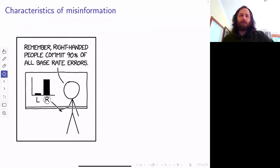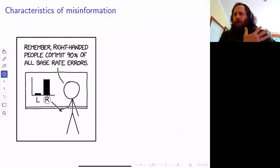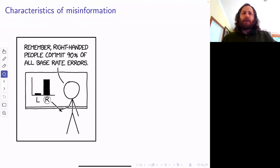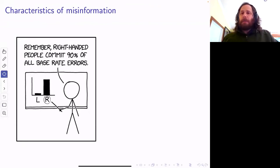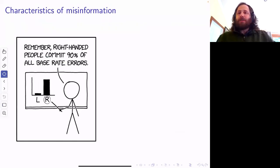Let's talk about what the characteristics of misinformation are. I gave you a huge slew of it. One characteristic is some statistical fallacies going on.